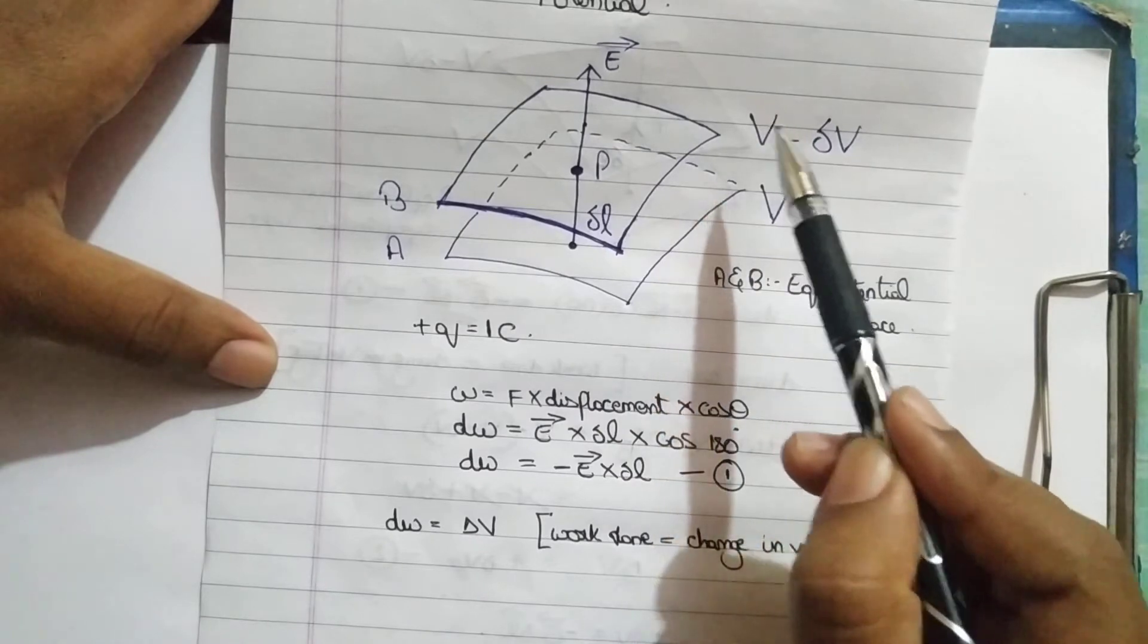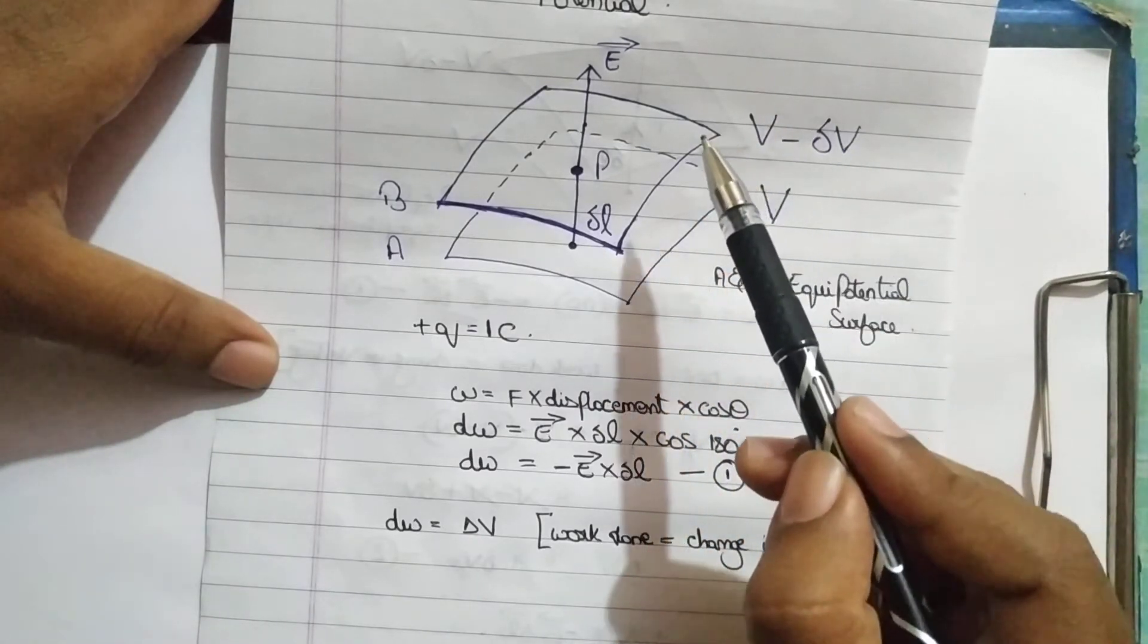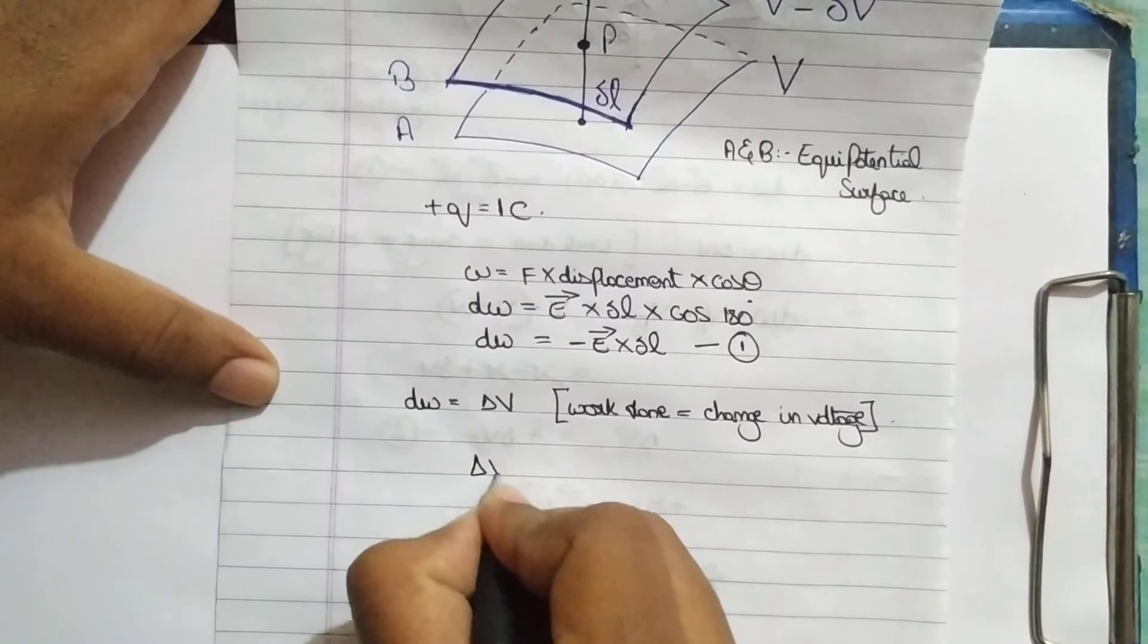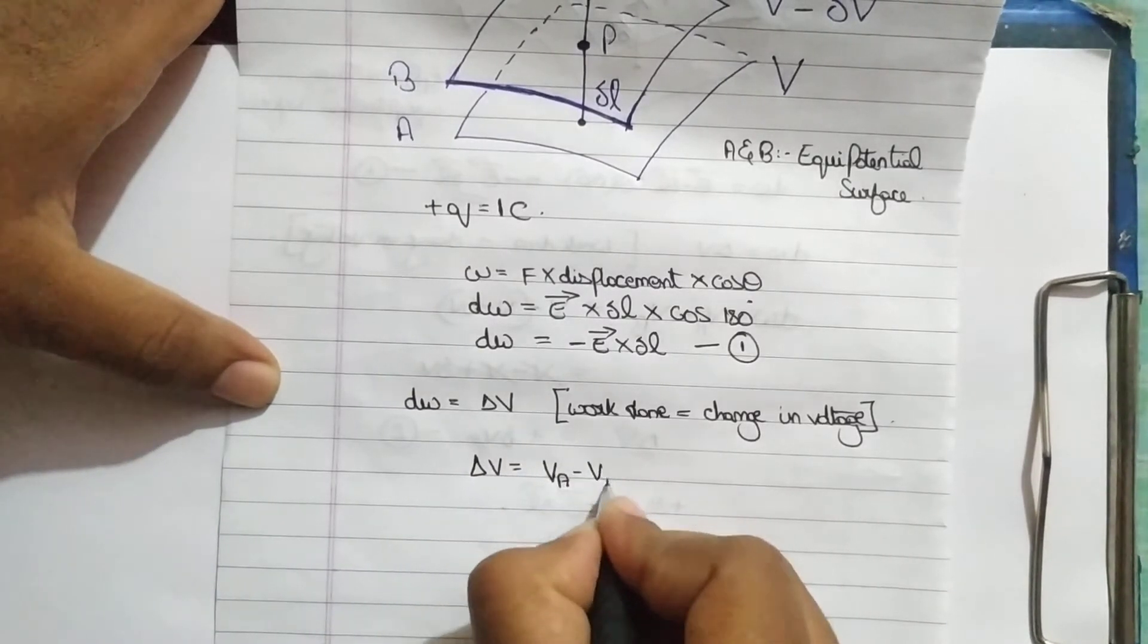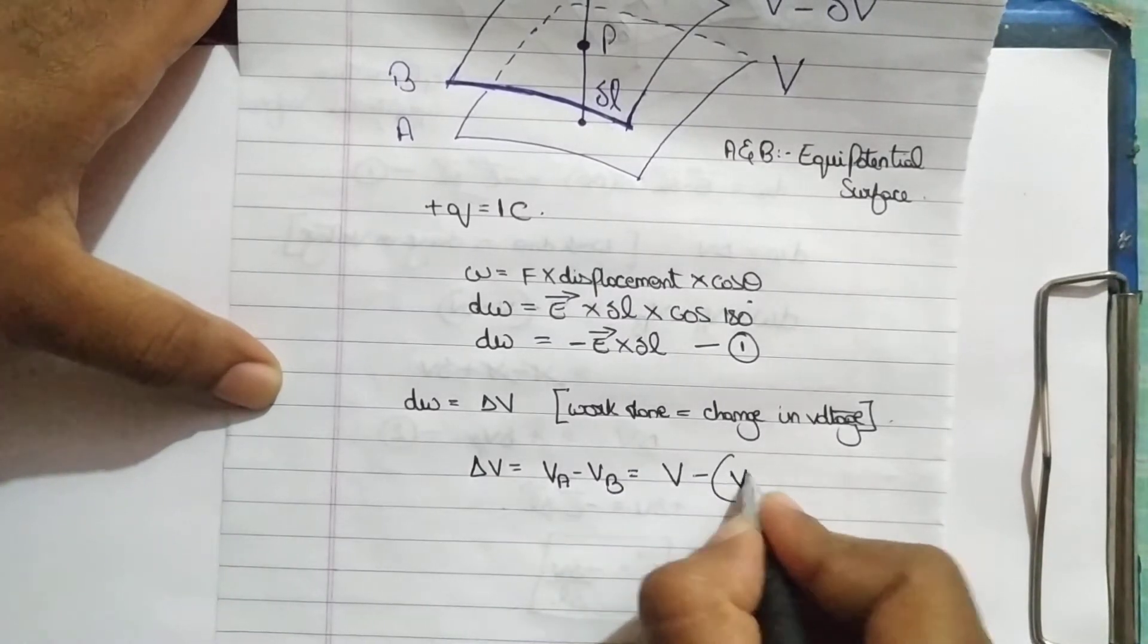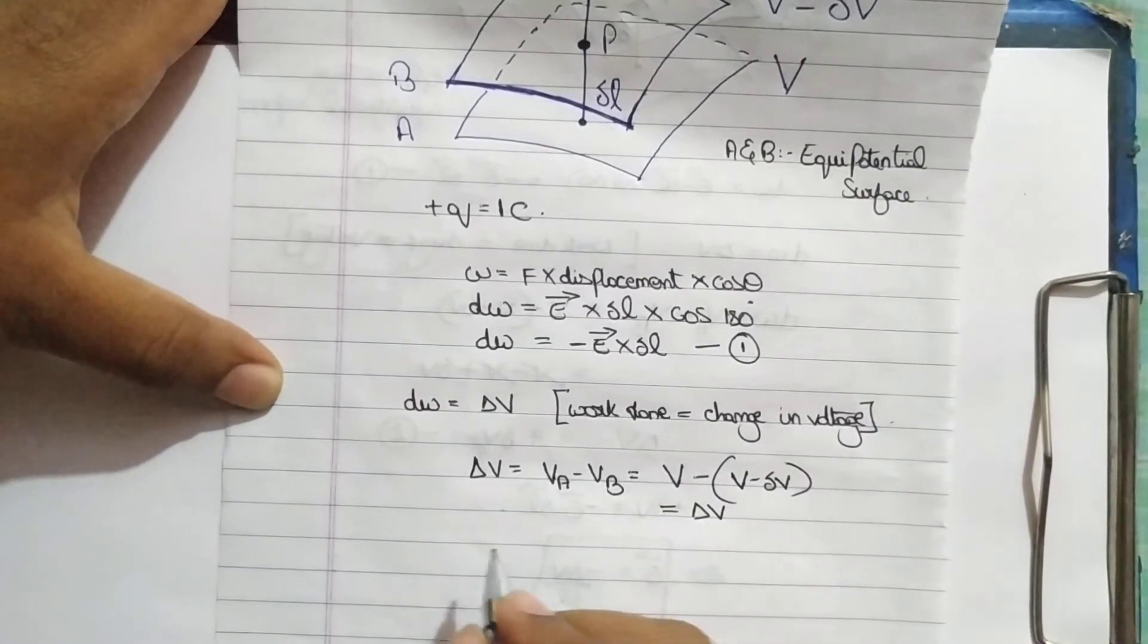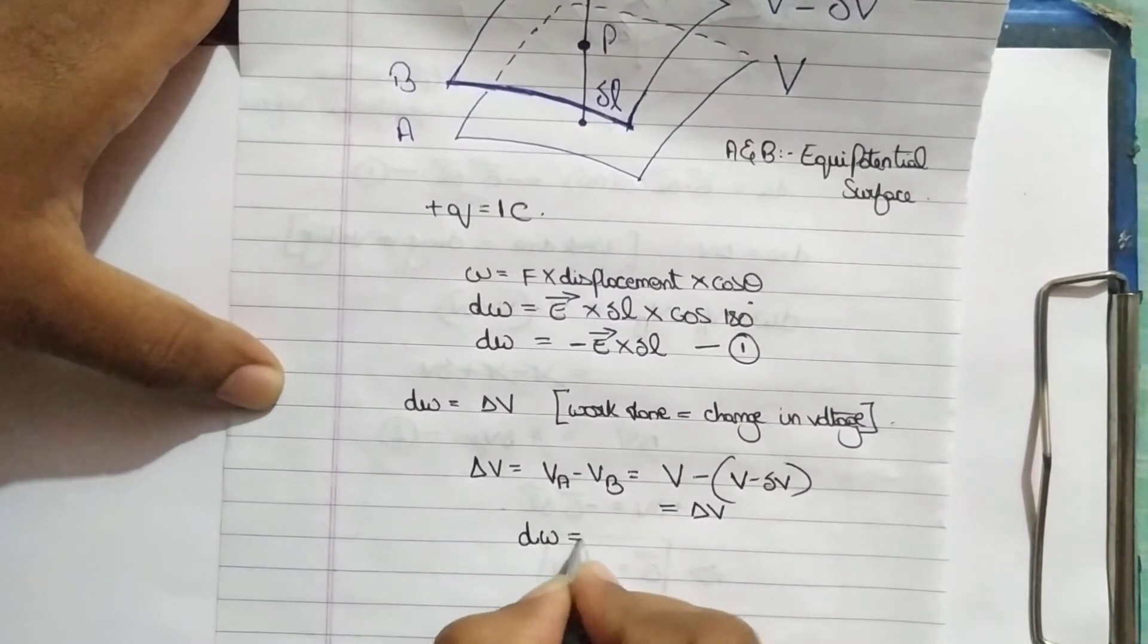As you guys see in this image here, we have V here and V minus delta V. We have reduced the potential at B by delta V. So change in potential is nothing but delta V, which is V at A minus V at B. V at A is V and V at B is V minus delta V.